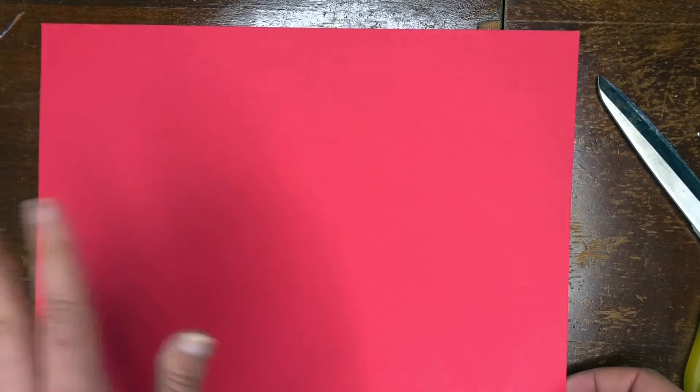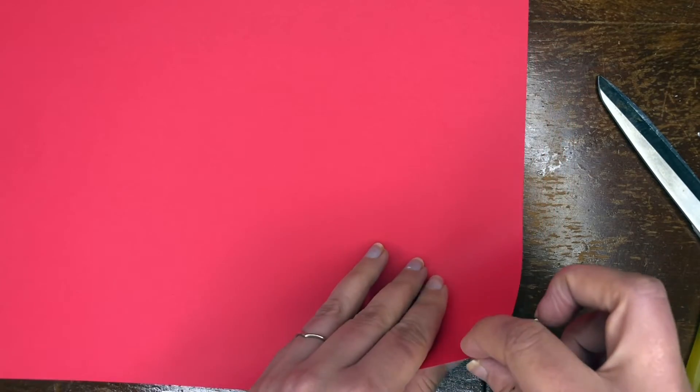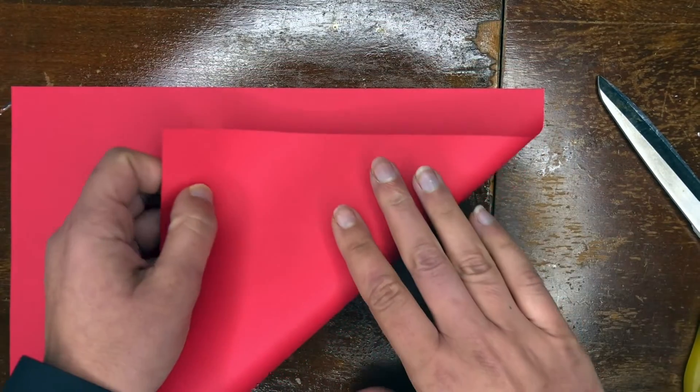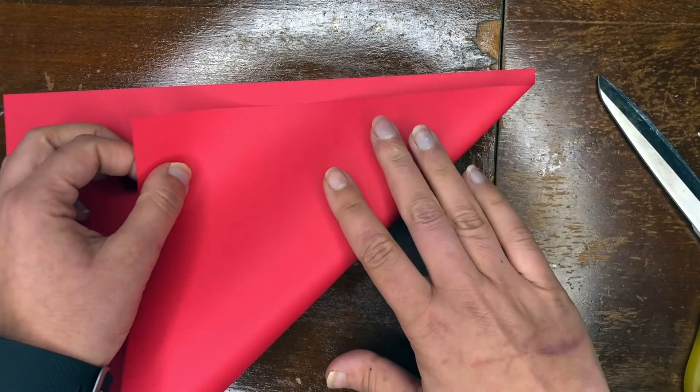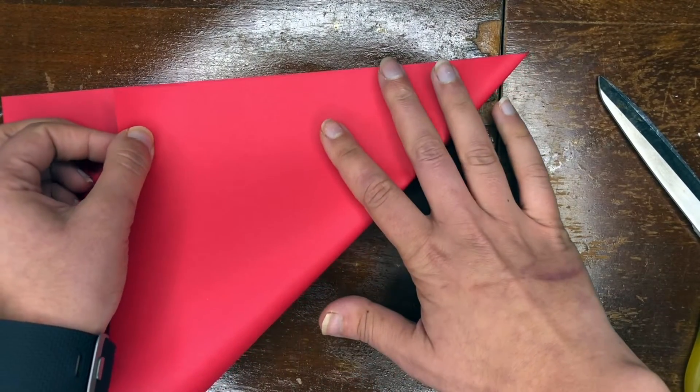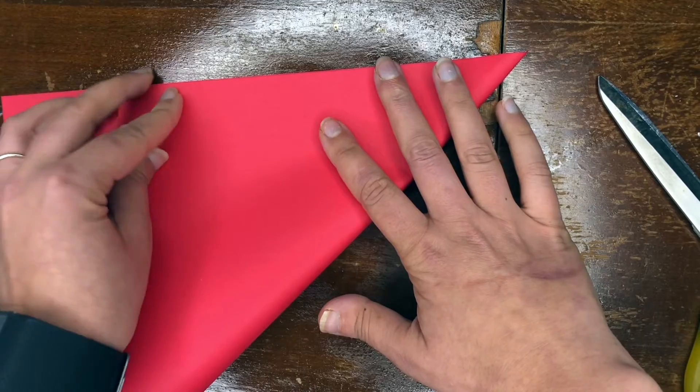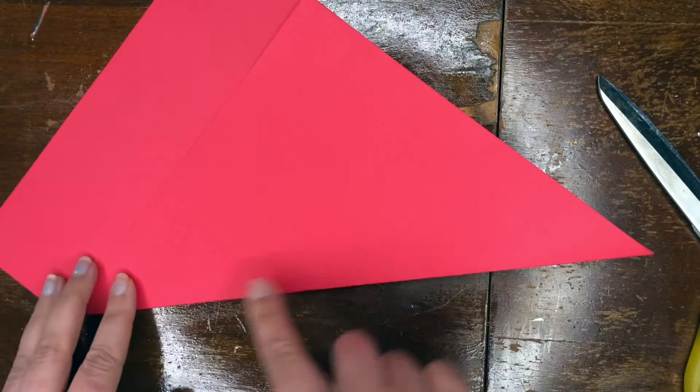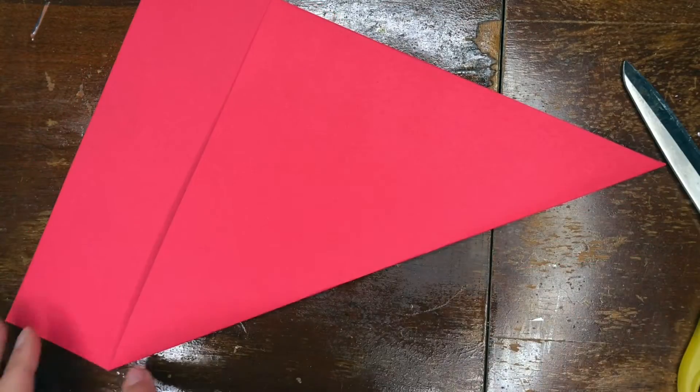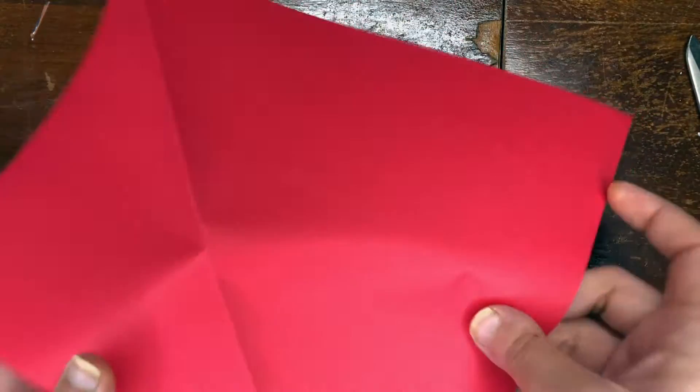The first thing we're going to do is you're going to take a piece of paper. Now it could be colored or it could be white and you can color it yourself. We're going to take the corner and we're going to fold it up so it's even with this side. We're going to be making ourselves a square. You're going to bring it right up there. Then you're going to crease it and we're going to cut right along that fold.